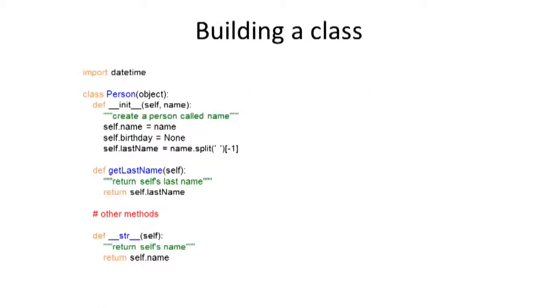So I'm going to import a module that lets me get out things like dates and time so I can talk about ages of people. The basic thing I want to do is start with a person class that inherits from the underlying object class. I need to have a way of starting up instances of that person class. My init method here will create a person with a name, and it's going to create a binding in the instance of name to whatever that person's name is. It's going to set birthday for that instance initially to none.